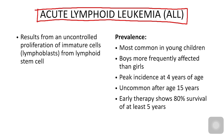Acute lymphoid leukemia results from uncontrolled proliferation of immature lymphoblasts from lymphoid stem cells. Unlike AML which involves general blast cells, ALL is more specific, involving chromosomal aberration resulting in abnormal transcription of factors developed by B and T cells. These are immature B and T lymphocytes.